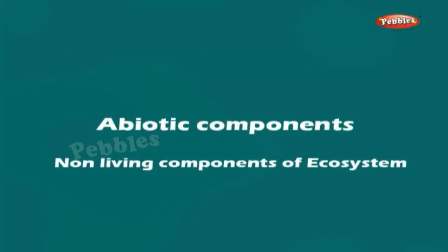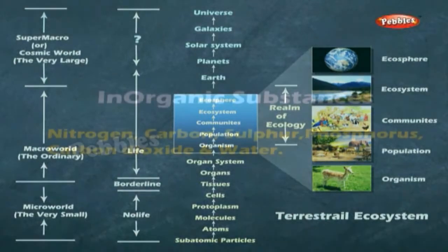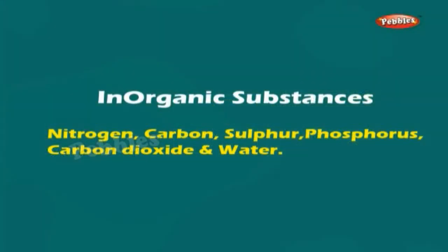Abiotic Components: It is the non-living component of an ecosystem and includes inorganic and organic substances and climatic conditions. Inorganic substances include nutrients like nitrogen, carbon, sulphur, phosphorus, carbon dioxide and water.